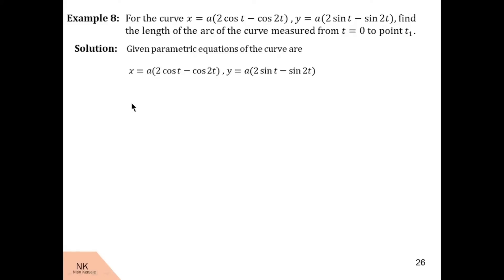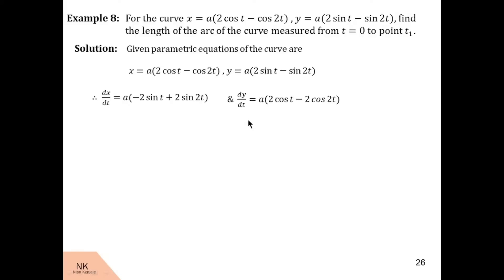dx/dt will be a times (−2sin t + 2sin 2t), since the derivative of cos t is −sin t and the derivative of −cos 2t is 2sin 2t. Similarly, the derivative of y with respect to t will be a(2cos t − 2cos 2t).